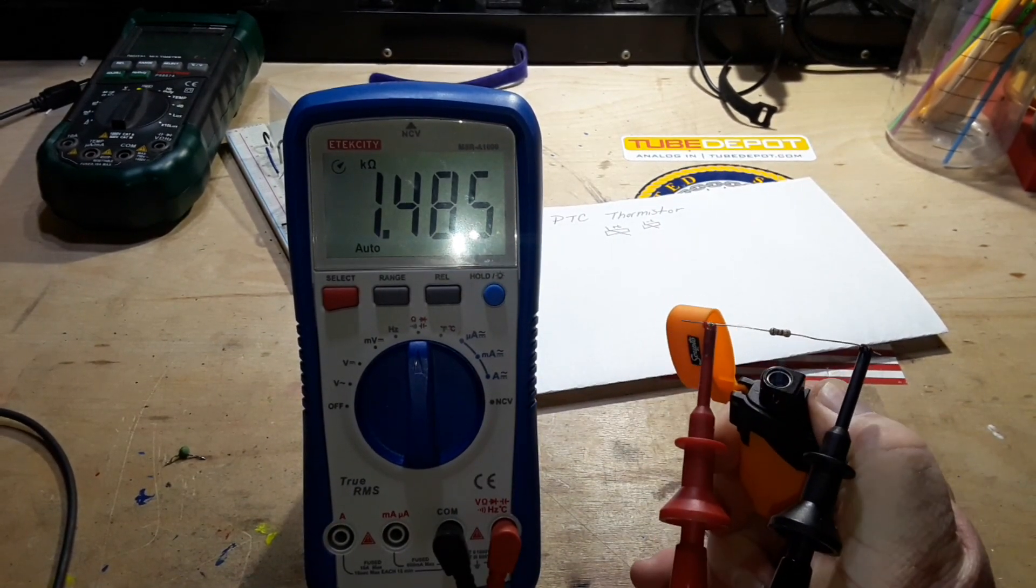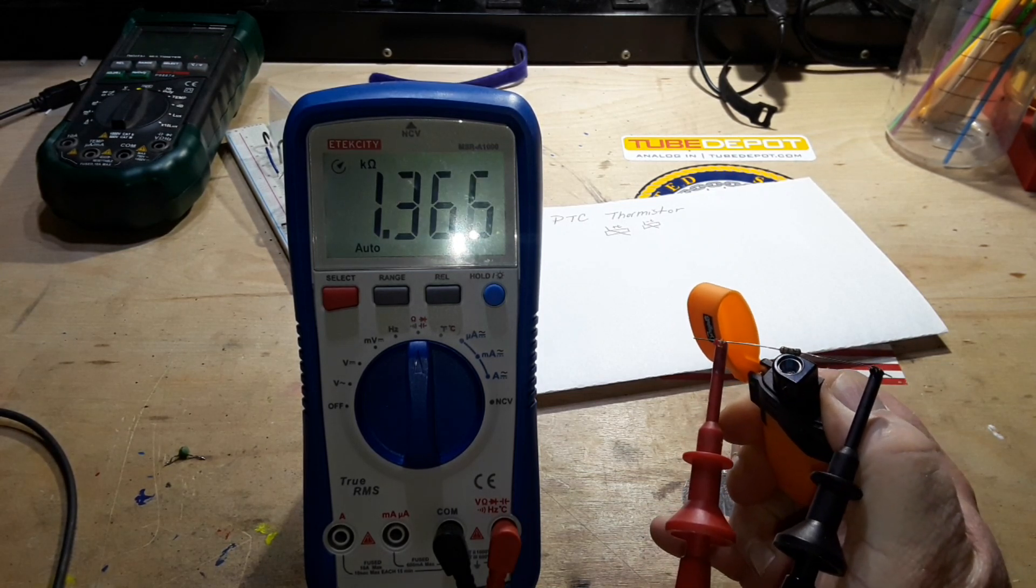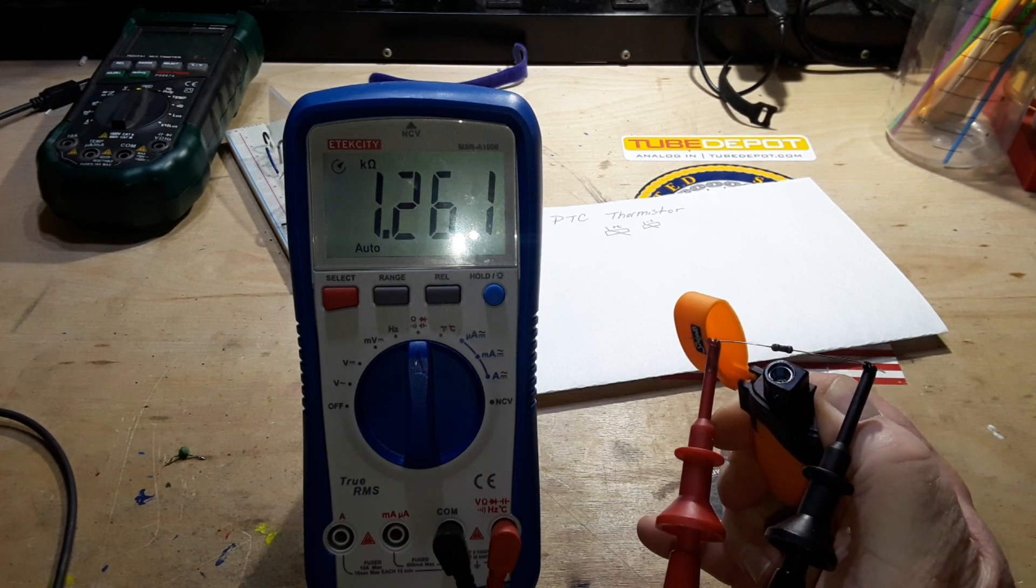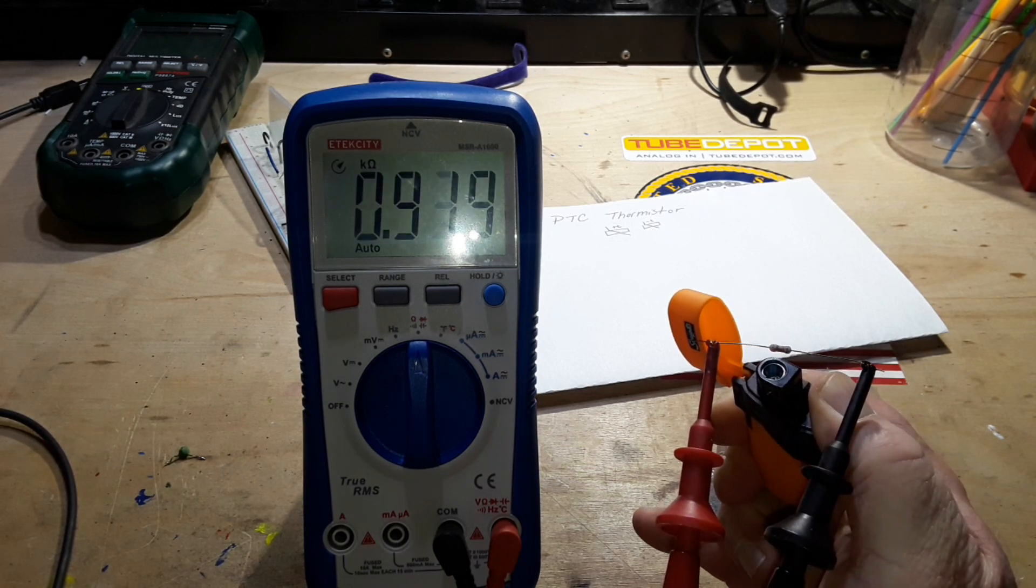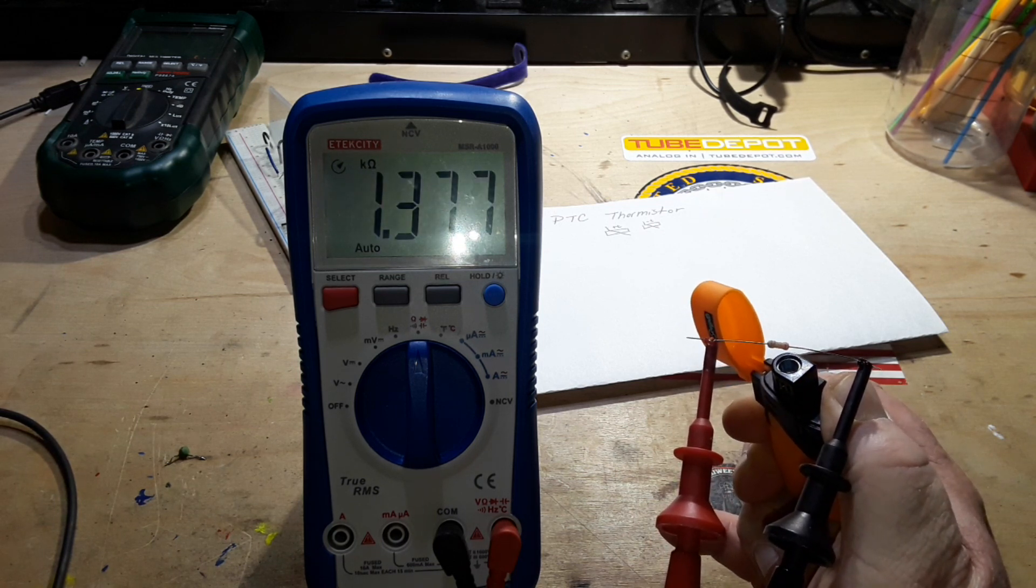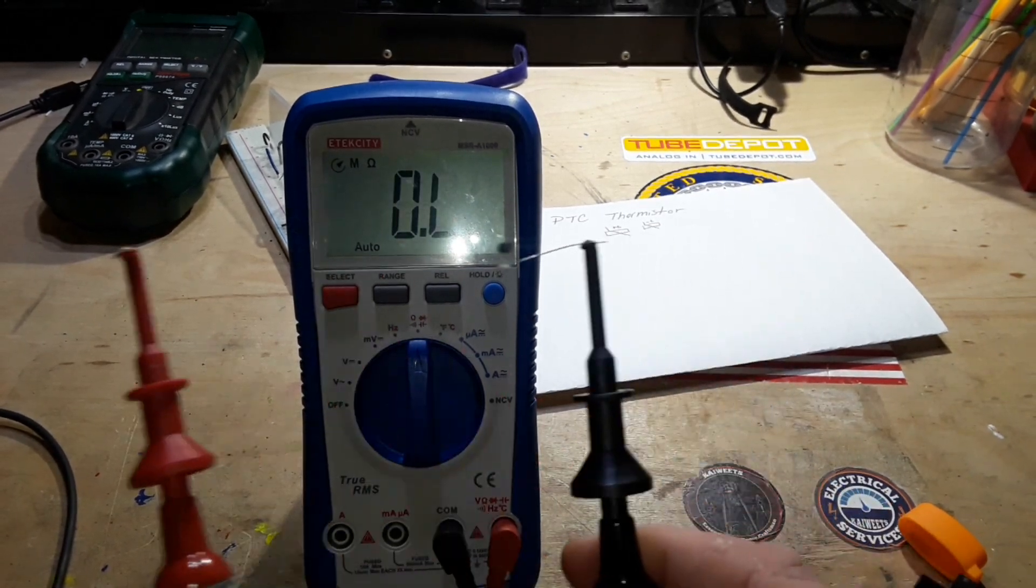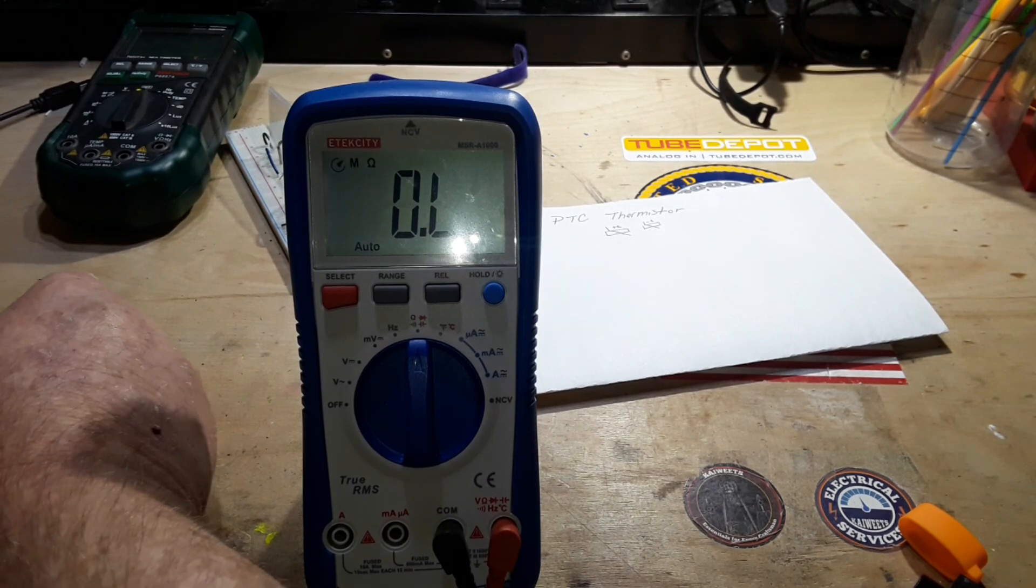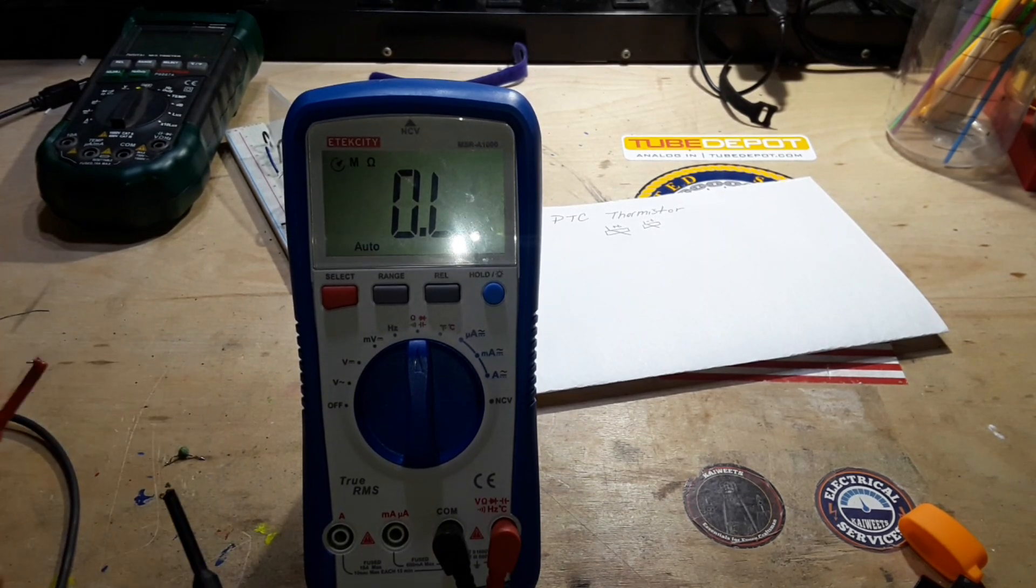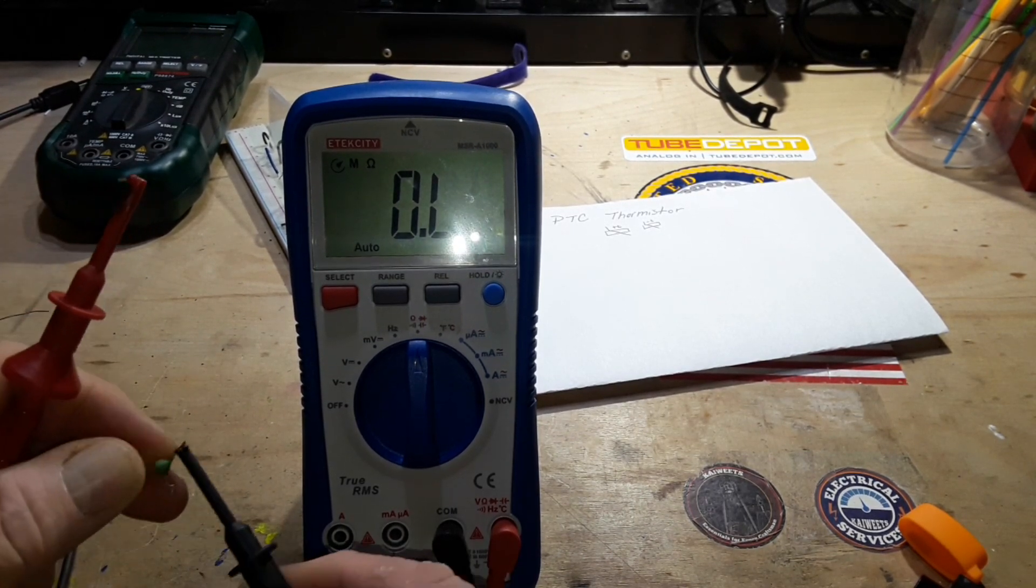Now, as we heat this, you notice the resistance pretty much remains the same until at some point, eventually, this thing is going to become so hot that it's simply going to not work anymore. And it just broke. Now, you're not going to get flame level temperature in your circuit. And if you do, well, you have other problems. But you get the idea.